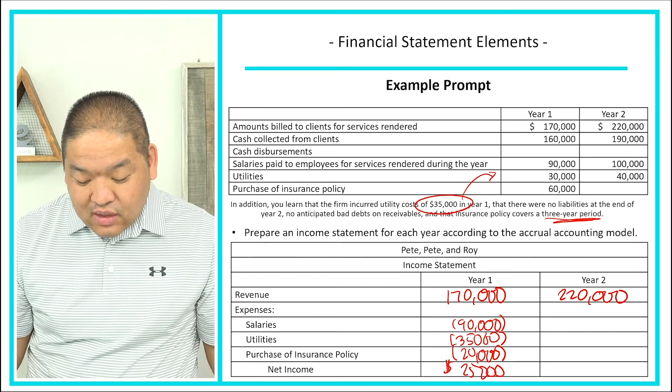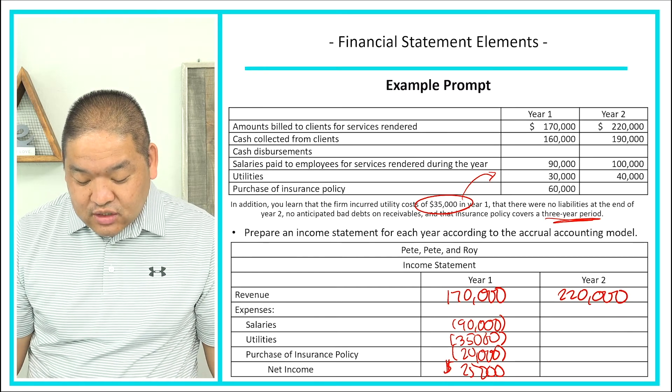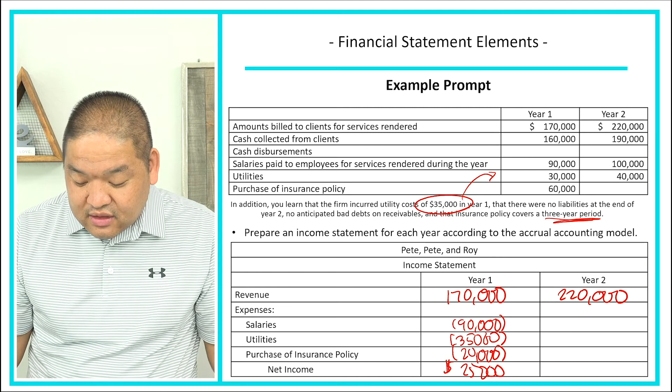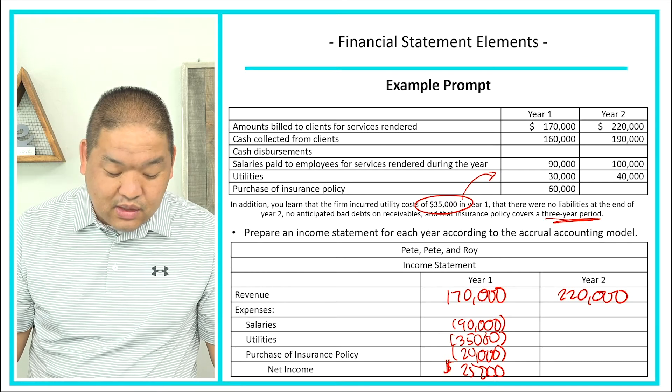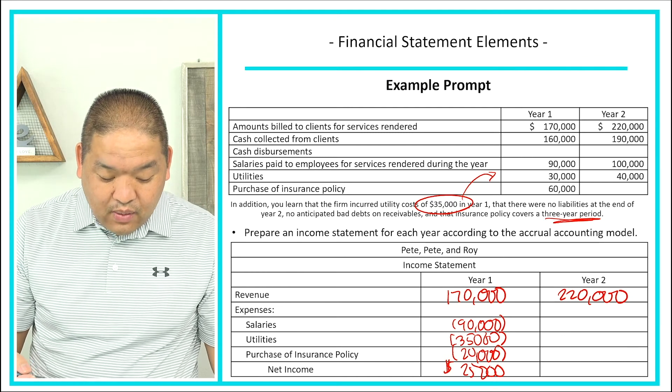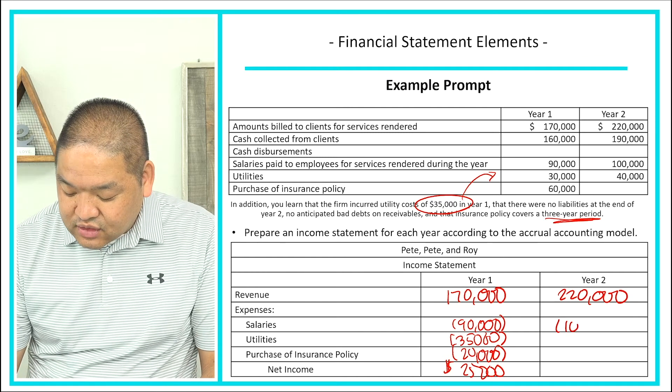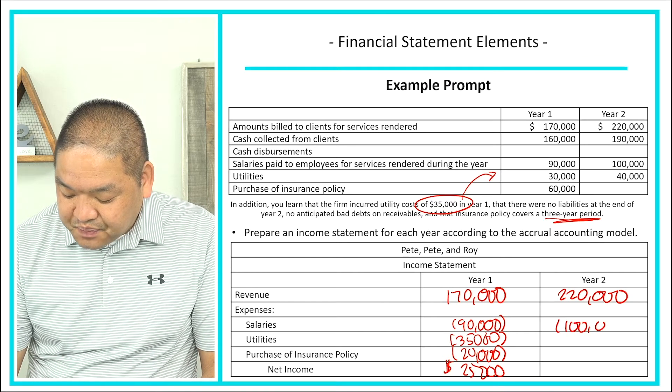For salaries in year two, again there's no additional information, so the assumption is salaries expense equals cash paid — $100,000.